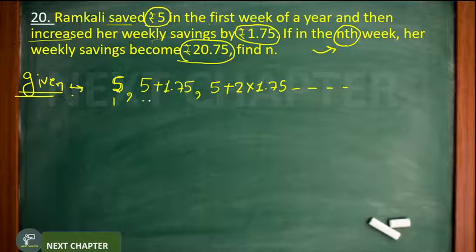Then in the third week, 5 rupees plus 2 times 1.75. In this way Ramkali kept saving money. And in some week, which week, you have to tell, her savings will be 20 rupees and 75 paise. You need to tell which week these 20.75 rupees belong to.